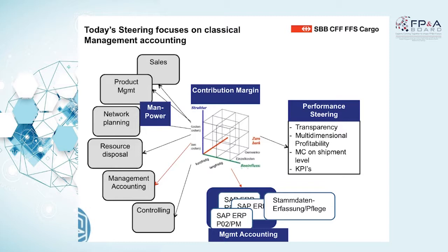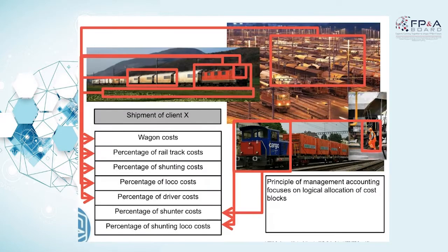Here you see the different cost blocks — these are the costs we have to allocate to the shipments. What is important to understand is: if you take one train, on that train we have shipments from several customers. So it is not just one customer having one train for itself, but we have one train with several shipments of different customers. This is a little bit of a problem — we have a shared production for different clients.